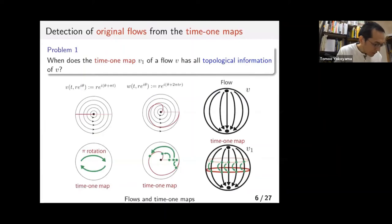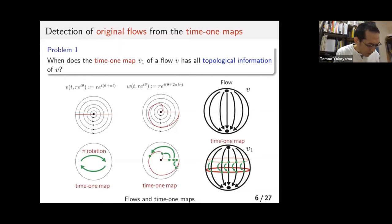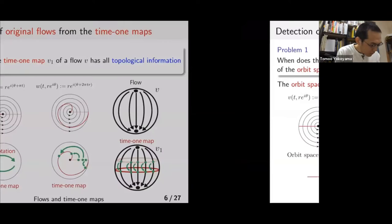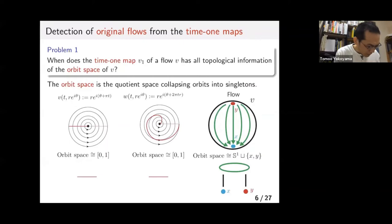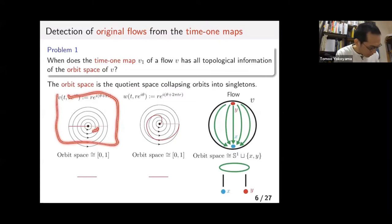If we deal with real data, sometimes we deal with fluid phenomena or flow data, but sometimes we can get only discrete data — for instance, a time-one map. But we'd like to know the original phenomena and the original flow data. We'd like to ask: when can we reconstruct from the time-one map to the original flow? In other words, when does the time-one map of the flow have all topological information of the orbit space? The orbit space is a quotient space corresponding to each orbit collapsed to a singleton. For instance, if you have just a rotation, if you collapse each orbit to a singleton, you get a closed interval.